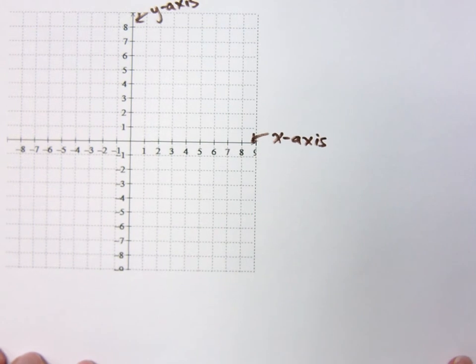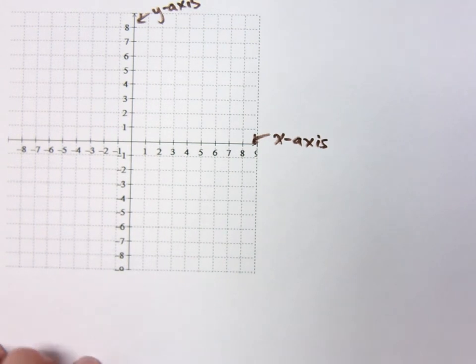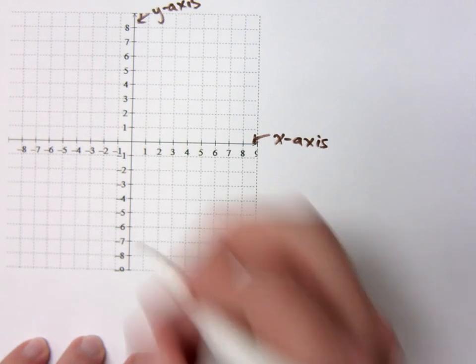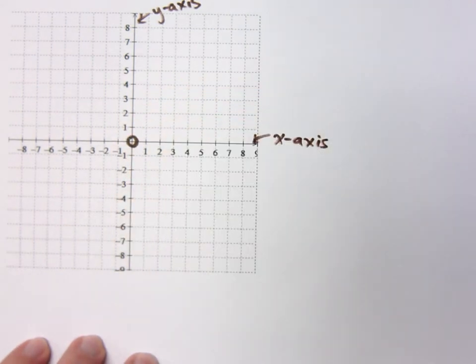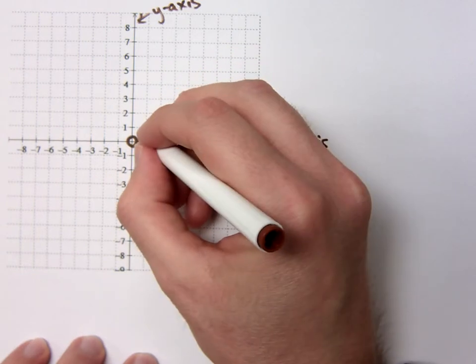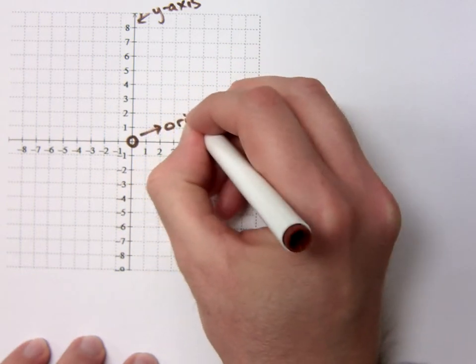So really what we have here, we have two number lines that are intersecting each other. And they intersect at this special point called the what? This is called the origin.